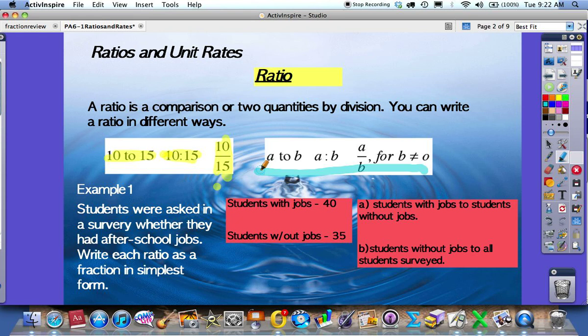Let's look at this example. Students were asked in a survey whether they had after-school jobs. Write each ratio as a fraction in simplest form. We can see here that the students with jobs were 40, and the students without jobs were 35. To write this as a ratio, we're going to read it first.